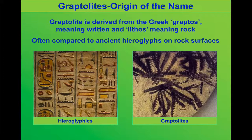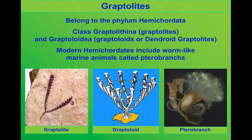They're part of a group of animals called the Hemichordata. This is a group who have a connection between individual organisms, almost like a central nervous system. There are some Hemichordates living today, but the Graptolites aren't one of them.